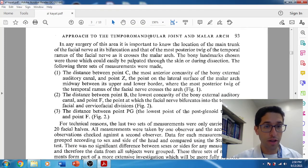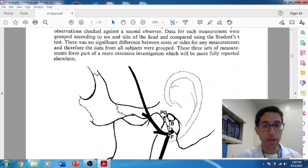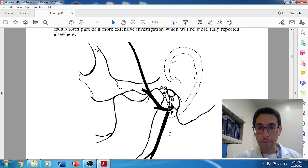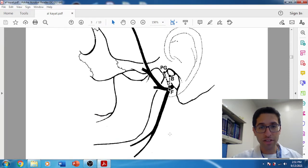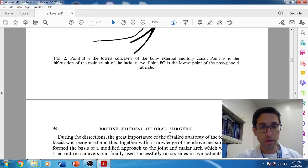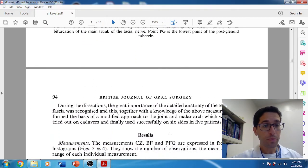In addition to that, they also did two other measurements. One was from the inferior aspect of the bony external auditory canal to the bifurcation of the nerve, and one was from the postglenoid tubercle to where the bifurcation was. Those may also be referenced a little bit. Not as essential, but still, they all kind of came from this paper.